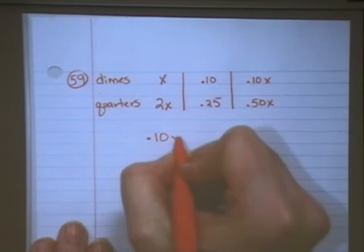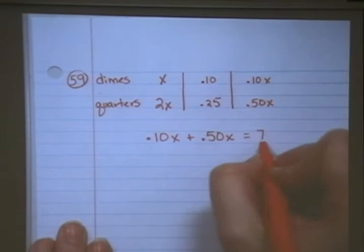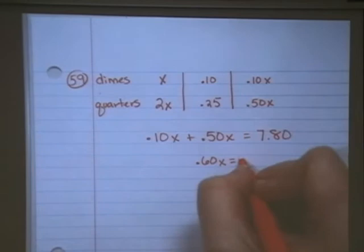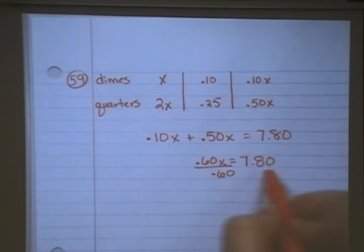Add that together: .10x plus .50x and set it equal to my seven dollars and eighty cents. Well, .10 plus .50 is .60x.